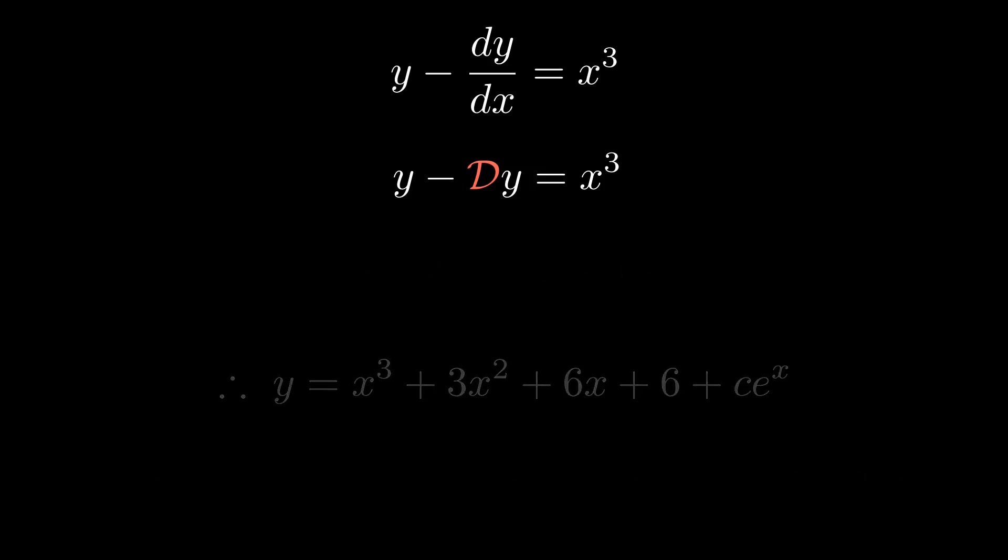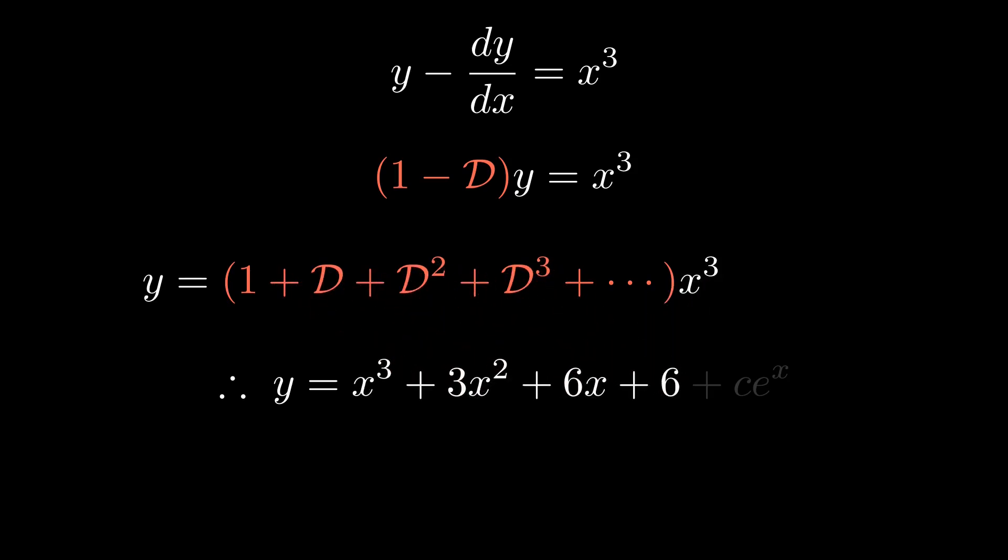Operational calculus offers an alternative method for problems like this, which is both much quicker and much weirder. Are you ready? We divide through by 1-D. Then just formally expand this as a geometric series. Add on the complementary function, and we're done. Isn't that beautiful?